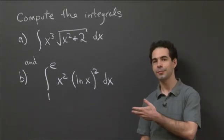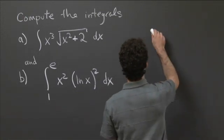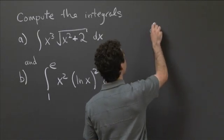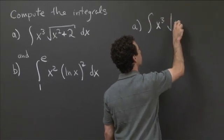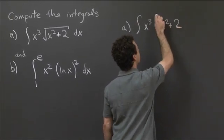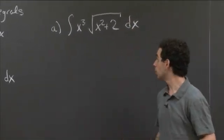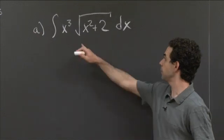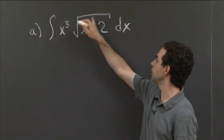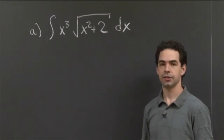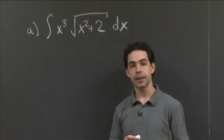Hopefully you had some luck working on these integrals. Let's start with the first one. For question A, let me just rewrite it here. We have the integral of x cubed times the square root of x squared plus 2 dx. Now if you look at this integral, what you see is a product of two terms: x cubed, which is a nice term, and the square root of x squared plus 2, which is not such a nice term.